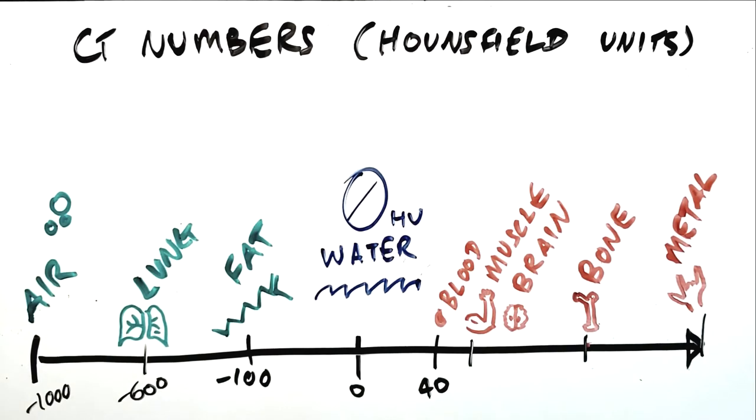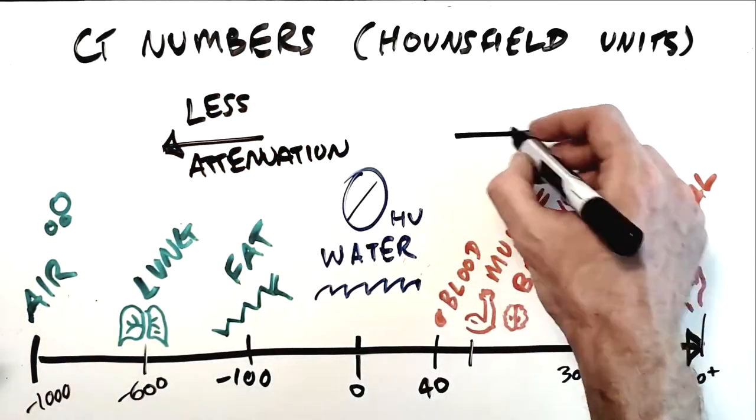The CT number of anything which attenuates less x-rays than water, so fat, lung tissue, or air, is less than zero Hounsfield units.